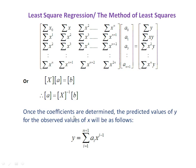Once these coefficients are determined, the predicted values of y for the observed values of x will be given by: y = sum over i=1 to n+1 of ai * x^(i-1).